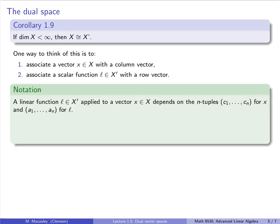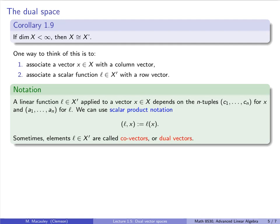Let me now show you why this perspective is even more useful. A linear function L applied to a vector x depends on both the n tuples C1 up to Cn for x and A1 up to An for L. Instead of using the notation L of x, which really biases toward x being a vector and L being a function rather than the fact that these are both just n tuples, we can use the more symmetric so-called scalar product notation ⟨L, x⟩.